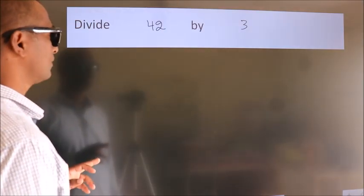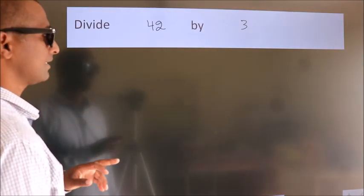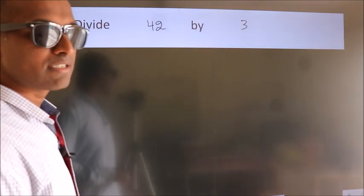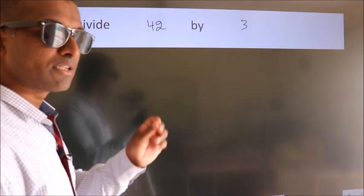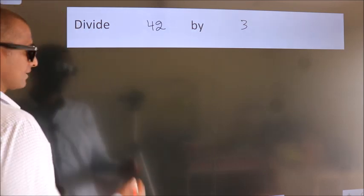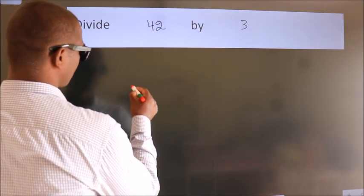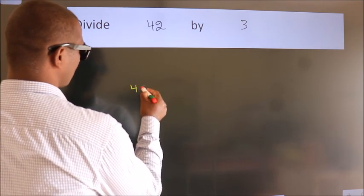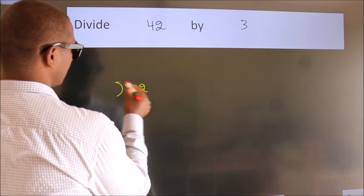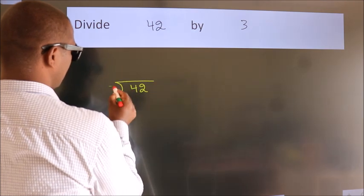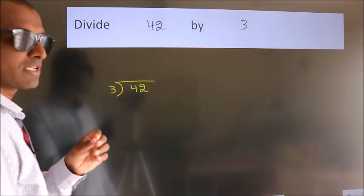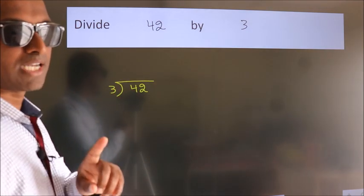Divide 42 by 3. To do this division, we should frame it in this way: 42 here, 3 here. This is your step 1.